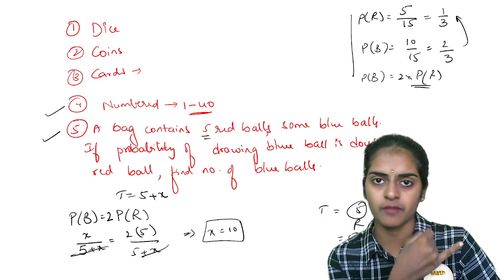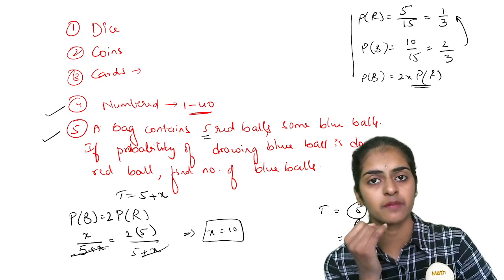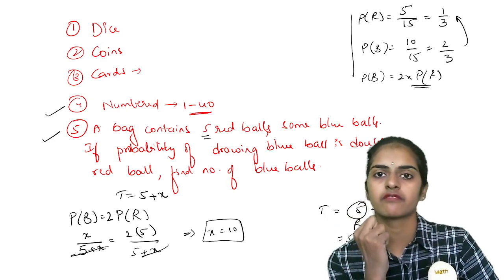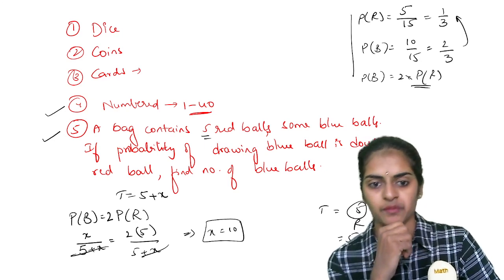They may ask you 5 bits, 4 to 5 bits. What is the probability of multiple of 5, finding multiple of 5 from these cards 1 to 40? What is the probability of finding multiple of 7? What is the probability of finding a perfect square number?